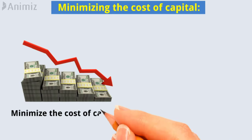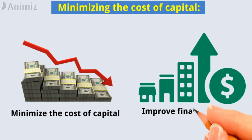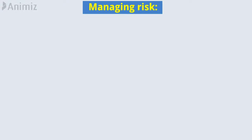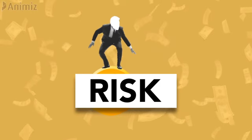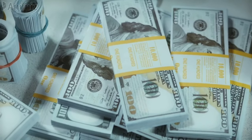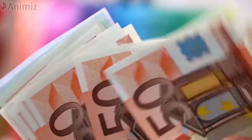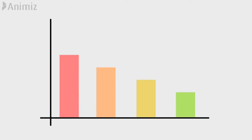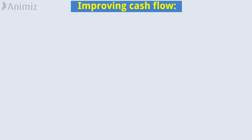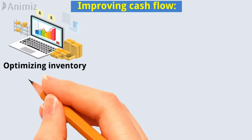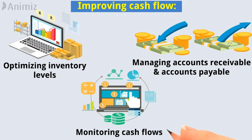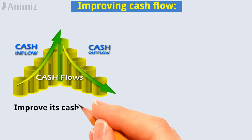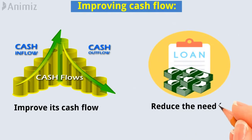This can help to minimize the cost of capital and improve the company's overall financial health. Managing risk: working capital management can help to minimize the risk of financial distress by ensuring that a company has enough cash reserves to cover unexpected expenses and weather any financial downturns. Improving cash flow: by optimizing inventory levels, managing accounts receivable and accounts payable, and monitoring cash flows, a company can improve its cash flow and reduce the need for external financing.